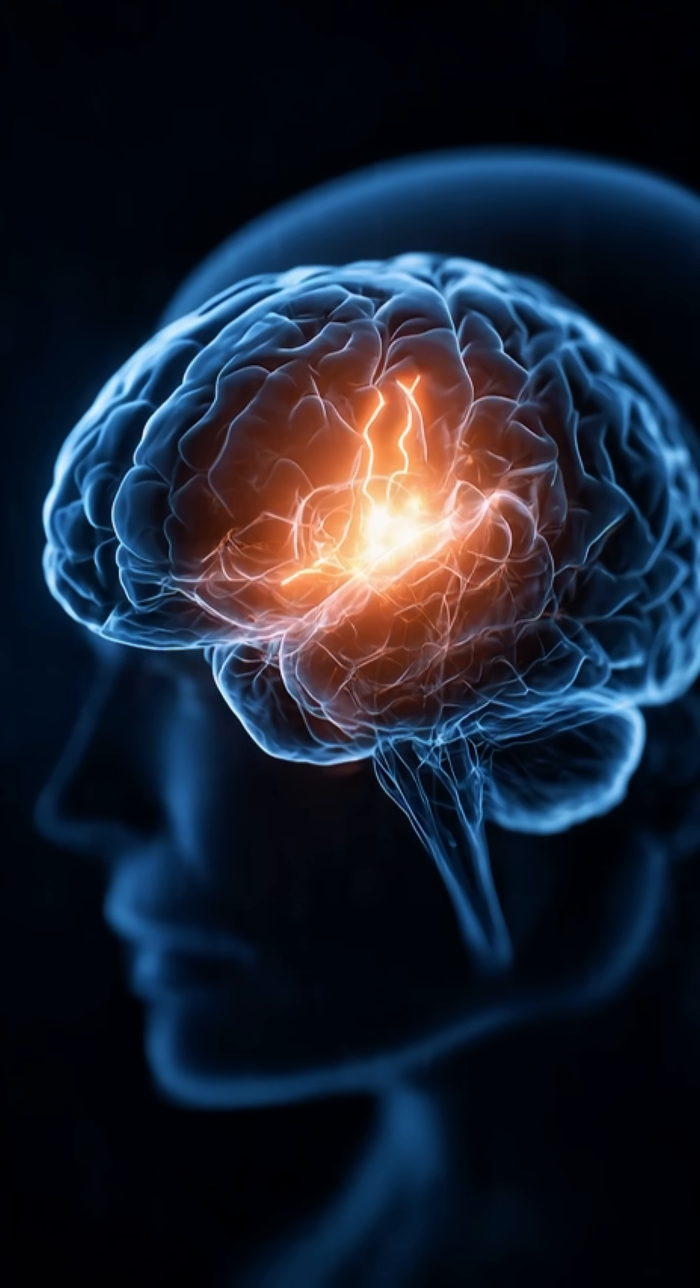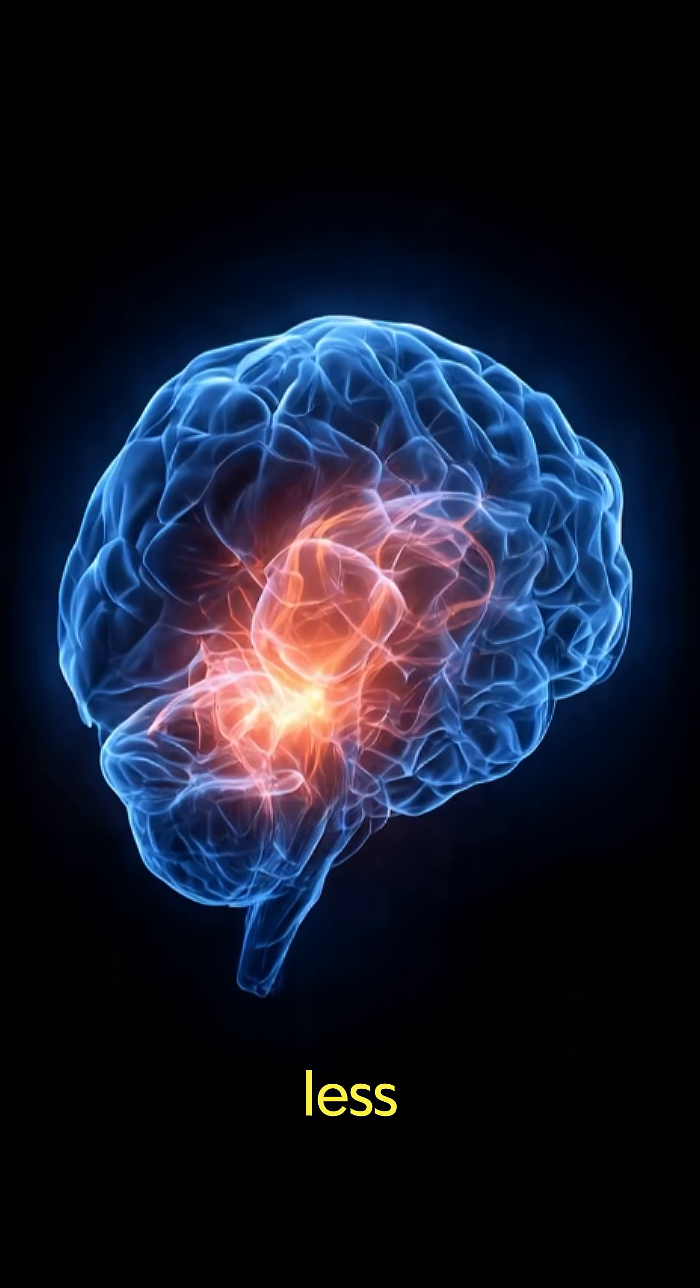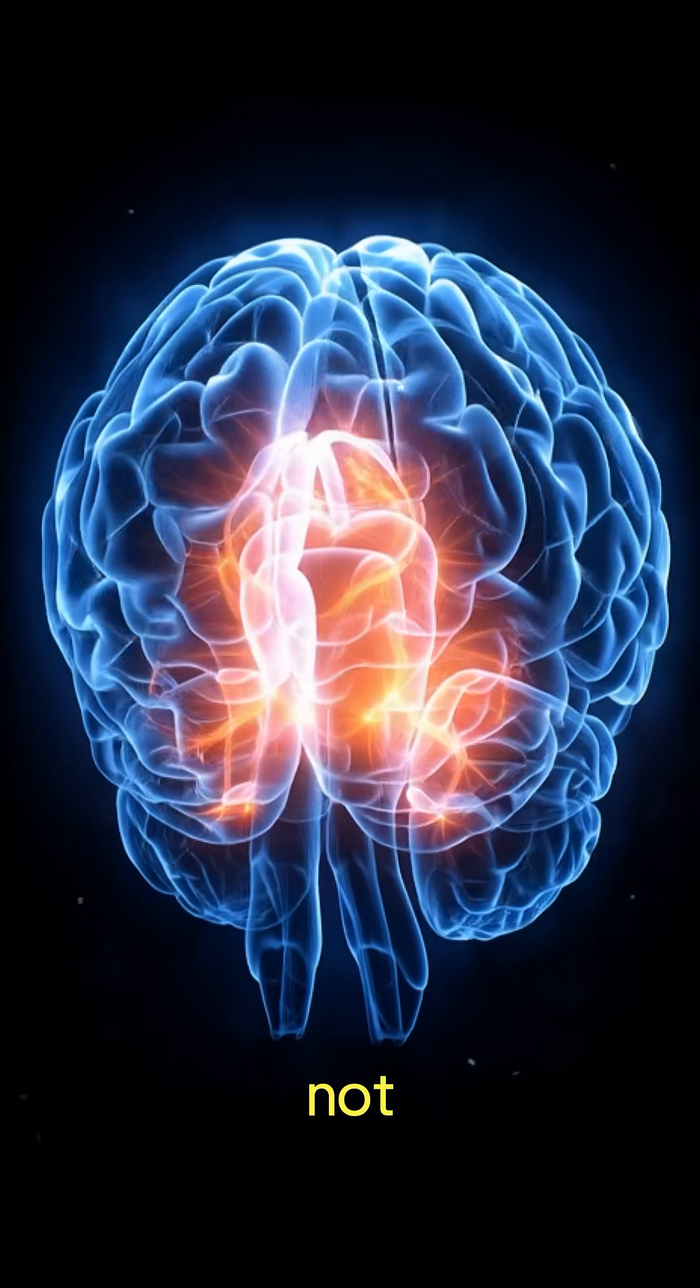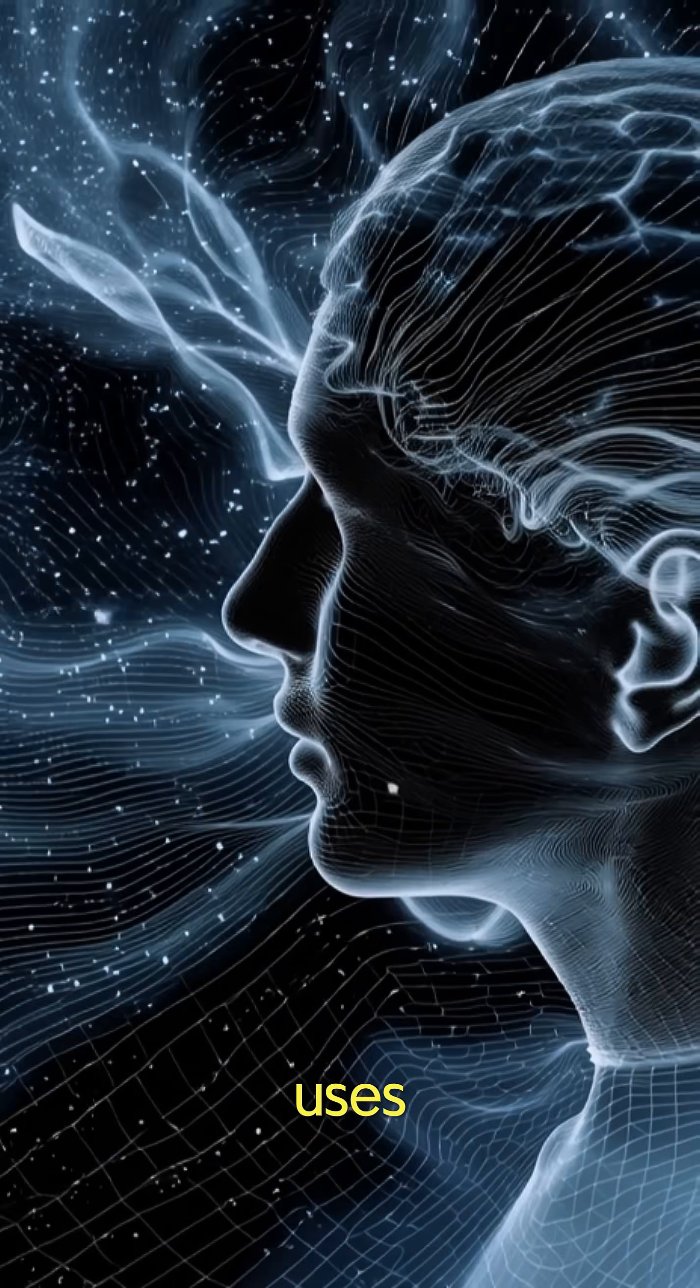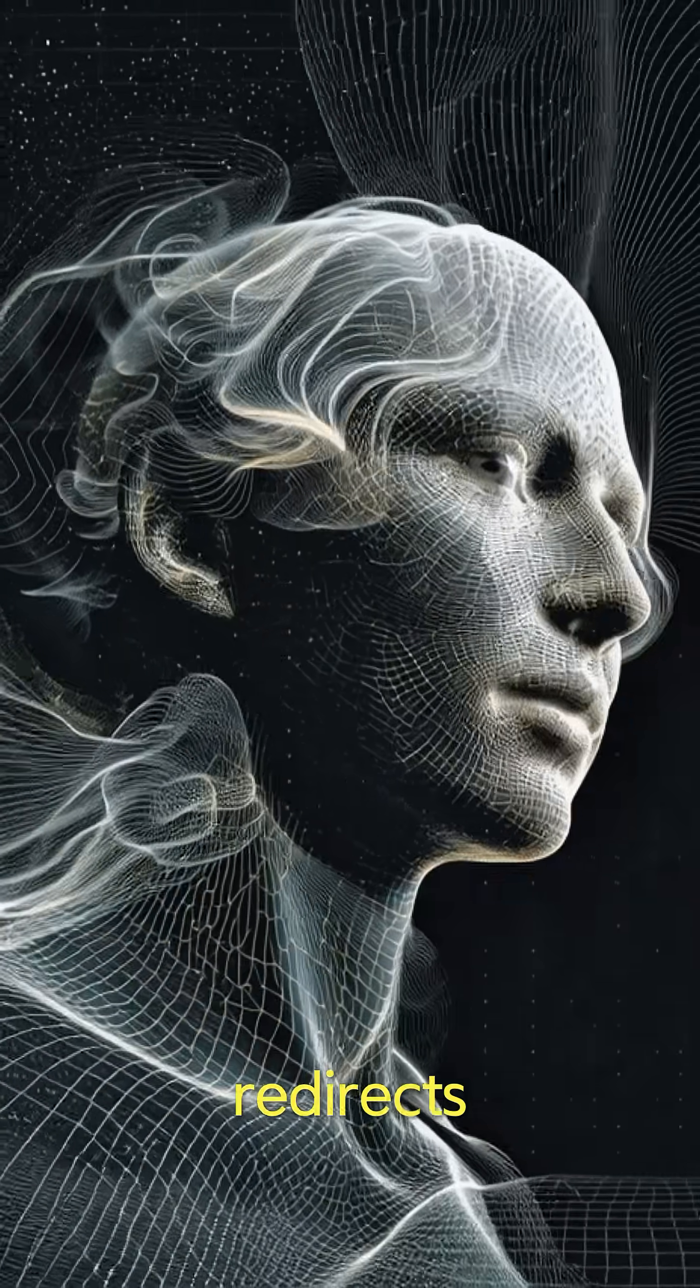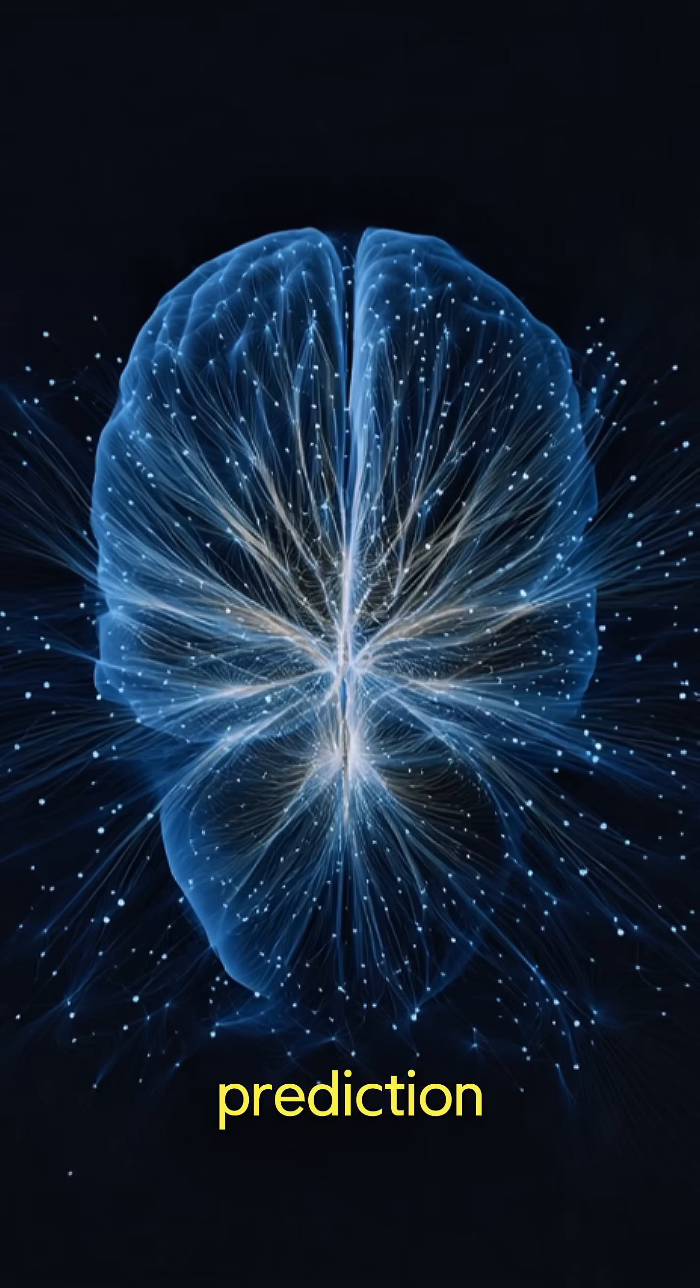In fMRI scans, their prefrontal cortex lights up less during problem-solving. Not because they're lazy, but because they're efficient. Their brain uses fewer resources to reach conclusions, then redirects that energy to pattern recognition and prediction.